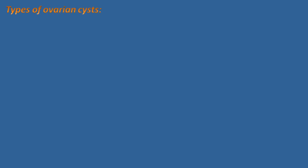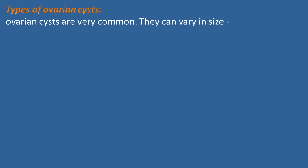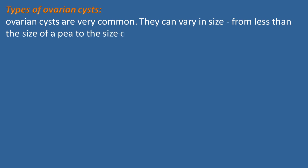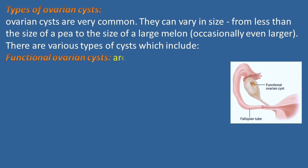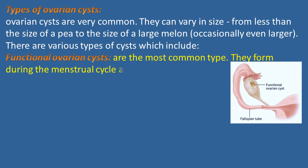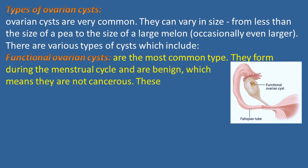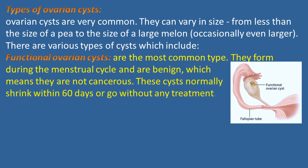Ovarian cysts are very common. They can vary in size from less than the size of a pea to the size of a large melon, occasionally even larger. Functional ovarian cysts are the most common type. They form during the menstrual cycle and are benign, which means they are not cancerous. These cysts normally shrink within 60 days or go away without any treatment.